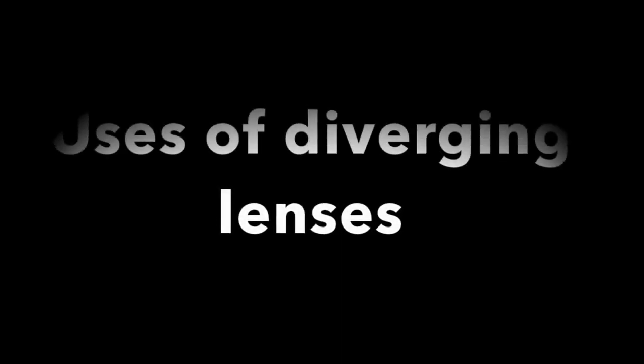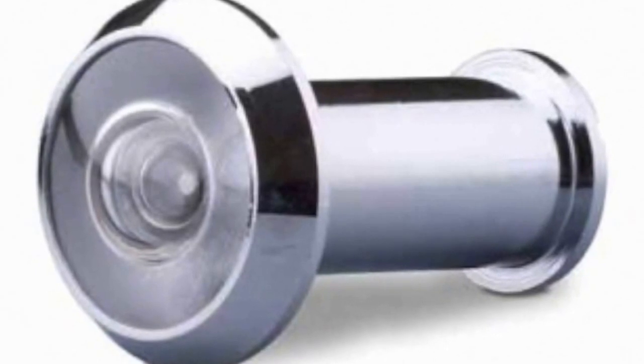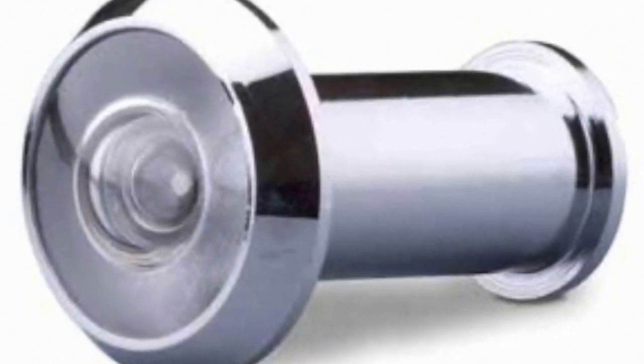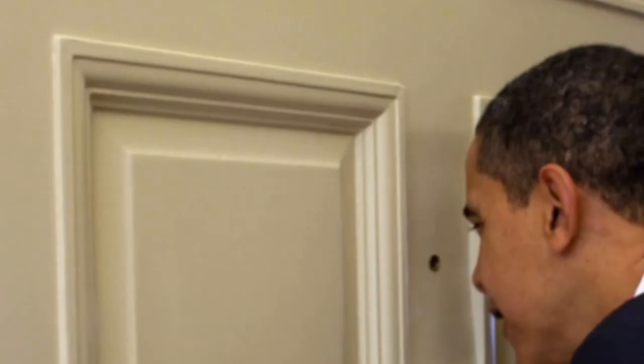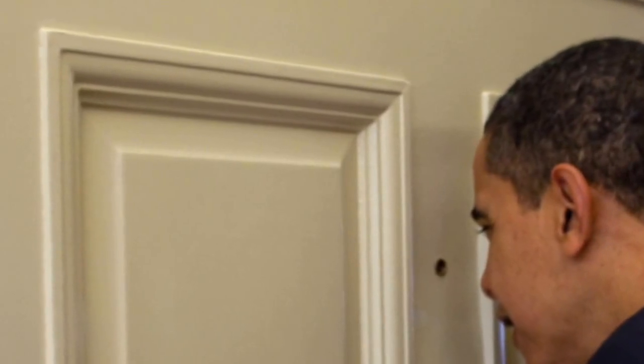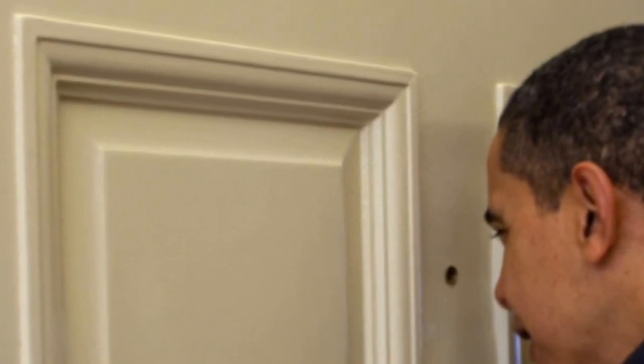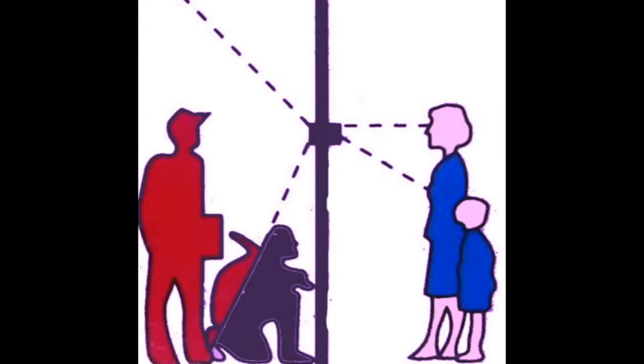Here's a couple of applications which help to illustrate how the lens works and what it does. First is a door viewer, which is a diverging lens in a little tube which is drilled into a door. You can look through the door viewer and outside you see a wide field of view.